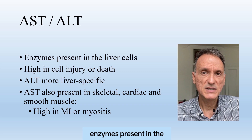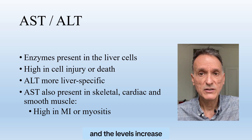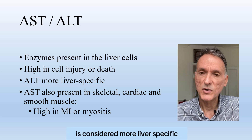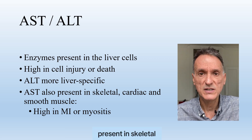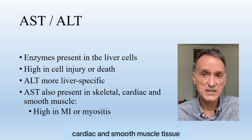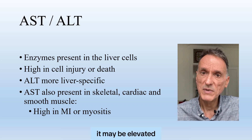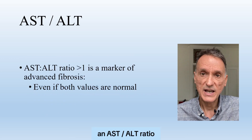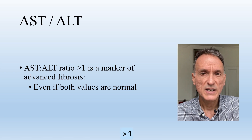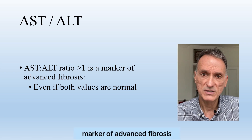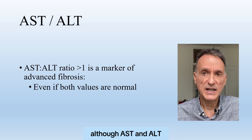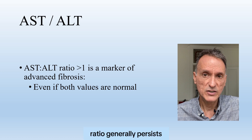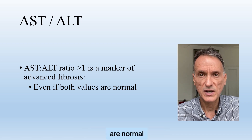AST and ALT are enzymes present in liver cells, and their levels increase in response to cell injury or death. ALT is considered more liver-specific, while AST is also present in skeletal, cardiac, and smooth muscle tissue, and so it may be elevated in patients with MI or myositis. An AST-to-ALT ratio of greater than 1 is a non-invasive marker of advanced fibrosis. Although AST and ALT can be normal even in liver disease, the high AST-ALT ratio generally persists even if both values are normal.